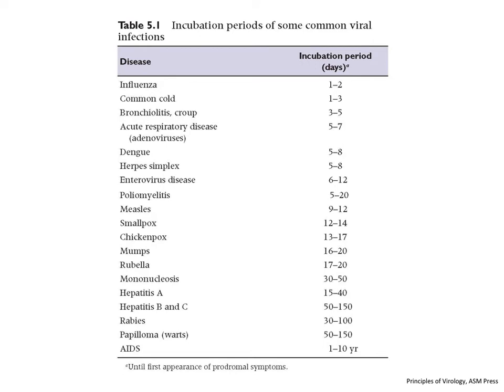Here are some incubation periods of common infections from the shortest — influenza and common colds. Respiratory infections, where the symptoms are respiratory, tend to be short because the virus is replicating right there. As viruses have to spread further — like polio, which has to get into the central nervous system — it takes longer. Rabies is very long, 30 to 100 days, which is good because you have time to immunize someone. HIV or AIDS is listed here as one to ten years, though I'd argue that's actually a persistent infection rather than a true incubation period.